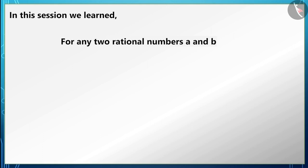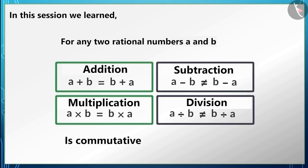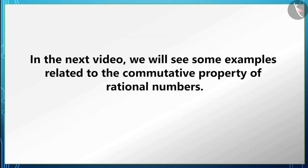In this session we learned that the addition and multiplication of rational numbers are commutative, but subtraction and division are not commutative. In the next video we will see some examples related to the commutative property of rational numbers. Thank you, see you in the next session.